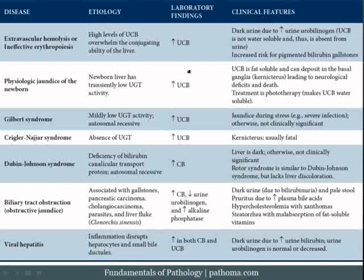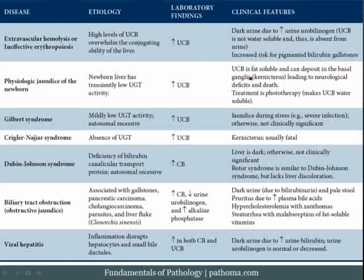The unconjugated bilirubin has no place to go — it's fat-soluble and cannot leak out through the urine. In a newborn, the key complication is that this fat-soluble unconjugated bilirubin can deposit within the brain, particularly within the basal ganglia, leading to neurologic deficits and death. This entire sequence is called kernicterus. The treatment is phototherapy. It is high yield to know that phototherapy does not conjugate the bilirubin — it merely makes the unconjugated bilirubin water-soluble, allowing it to leak out in the urine.